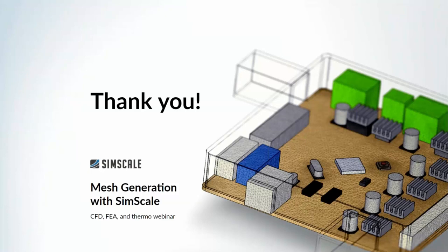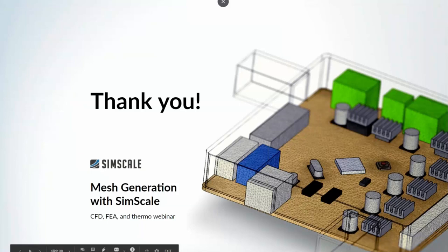What is the best way to mesh really thin elements that would normally be meshed with a shell? You can address this by using the number of gap elements setting, which is also applicable for FEA cases. You can select one, two, three, or four elements within the thickness of your part to calculate more accurately and capture what's happening within the thickness of your shell.